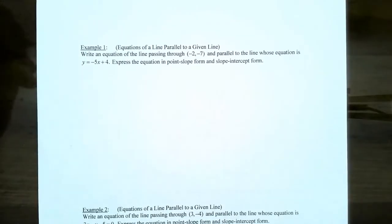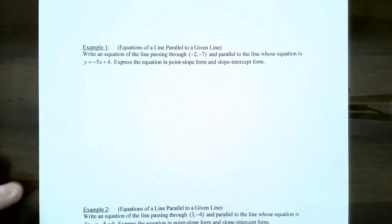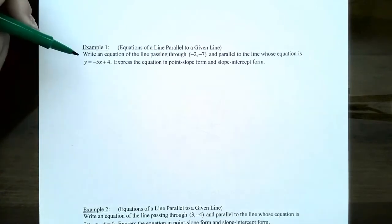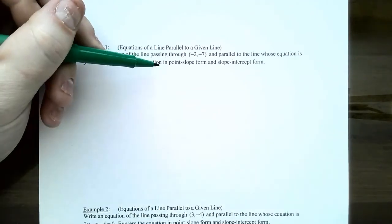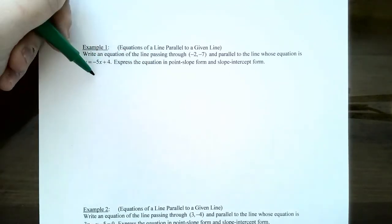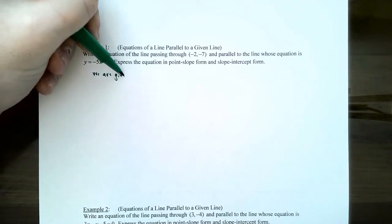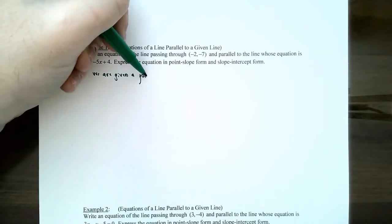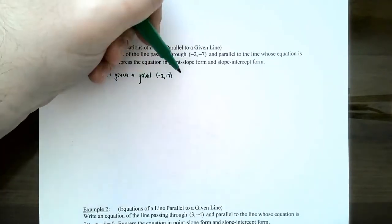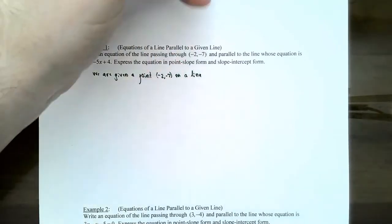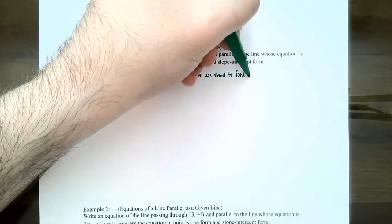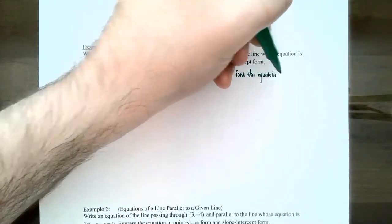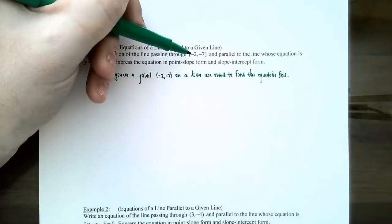Let's look at Example 1. This combines what we've learned in the last couple of videos with what we've just learned about parallel lines and their slope. Example 1 says: write an equation of a line passing through the point negative two, negative seven, and parallel to the line whose equation is y equals negative five x plus four. We need to write the equation in both point-slope form and slope-intercept form. We are given a point negative two, negative seven on the line we need to find.